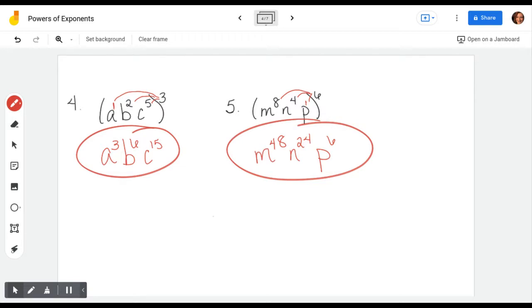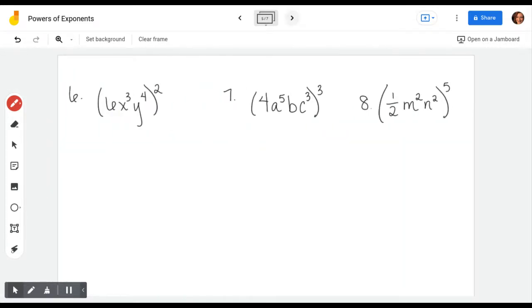When you have coefficients in there you just can't forget to include those. They have exponents too, they're just hiding, but there's really a 1 hiding there with the 6. That really says 6 to the 1, it just looks goofy to write it that way. So I'm going to distribute exponent to exponent to exponent. It's going to become 6 to the 2nd, x to the 6th, y to the 8th.